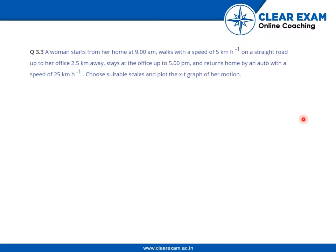Welcome back. Let us go through this question. A woman starts from her home at 9 am, walks with a speed of 5 km per hour on a straight road up to her office 2.5 km away, stays at the office up to 5 pm, and returns home by an auto with a speed of 25 km per hour. Choose suitable scales and plot the XT graph of her motion.